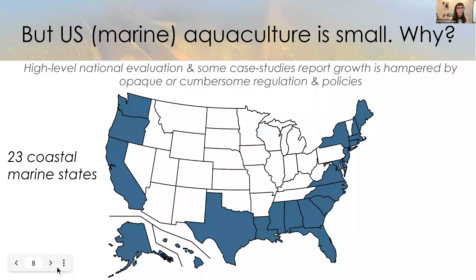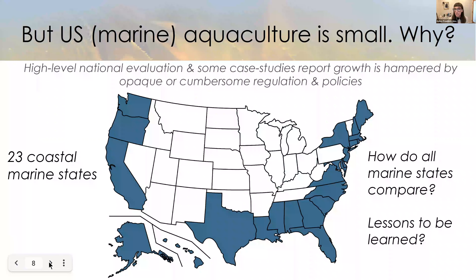Why is the US ranked so low? There have been high-level national evaluations and some case studies, with reports identifying that growth is hampered by opaque or cumbersome regulations and policies. However, of these 23 coastal states, there hasn't been a really deep dive comparison for each individual state. That's one of the things we sought to address — how do all these marine states compare from a data and policy perspective, and are there lessons to be learned from the heterogeneity or similarities across states?